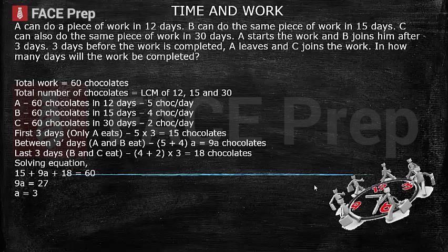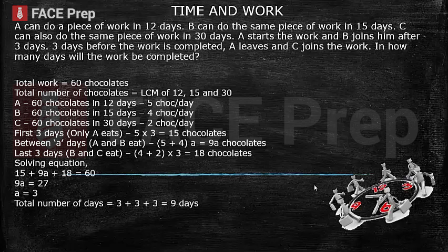Solving this equation, we get the value of x as 3. So the total number of days in which the work is completed is 9, that is 3 plus 3 plus 3. The first 3 days when A was working alone, then 3 days when A and B were working together, and finally the last 3 days when only B and C were working.